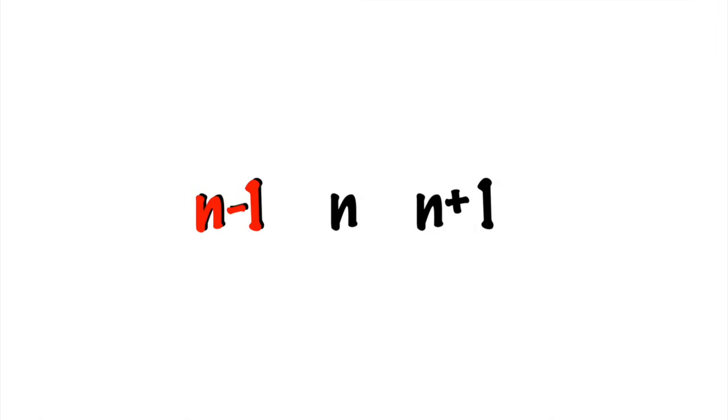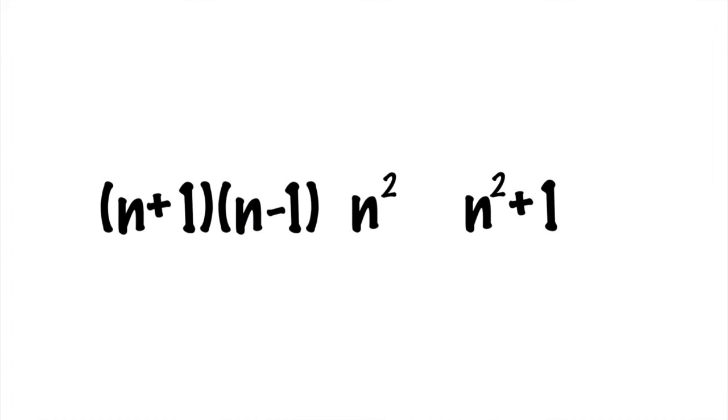That means n minus one is a factor of n squared minus one. And if n minus one is a multiple of three, then n squared minus one has to be a multiple of three. Which means that neither of these guys are a multiple of three. All right, well, we've looked at what happens when n minus one and n are the multiples of three.